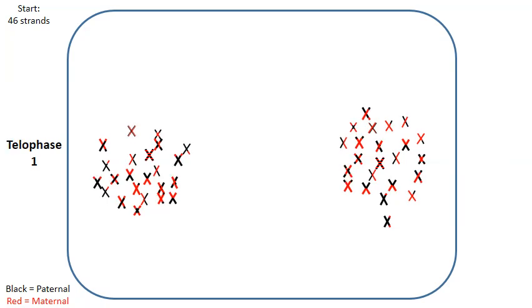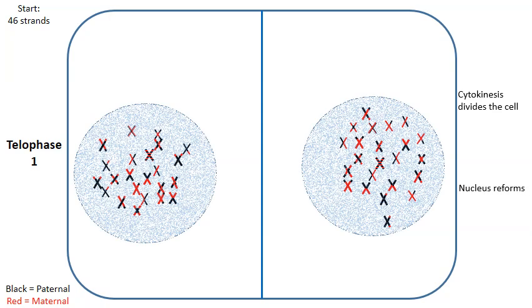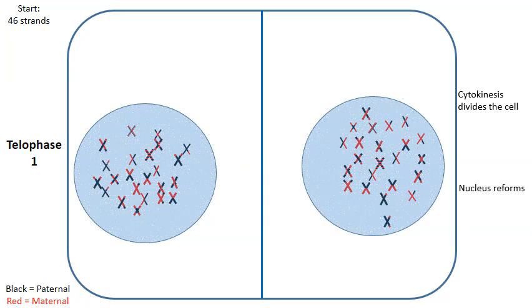And so as we move on to telophase number one, cytokinesis will divide the one cell into two cells and sometimes even the nucleus will reform. Now, just for the sake of this animation, I showed the nucleus reforming. Sometimes it does, sometimes it doesn't. Well, now that we're wrapping up meiosis number one, we're going to move into meiosis number two.